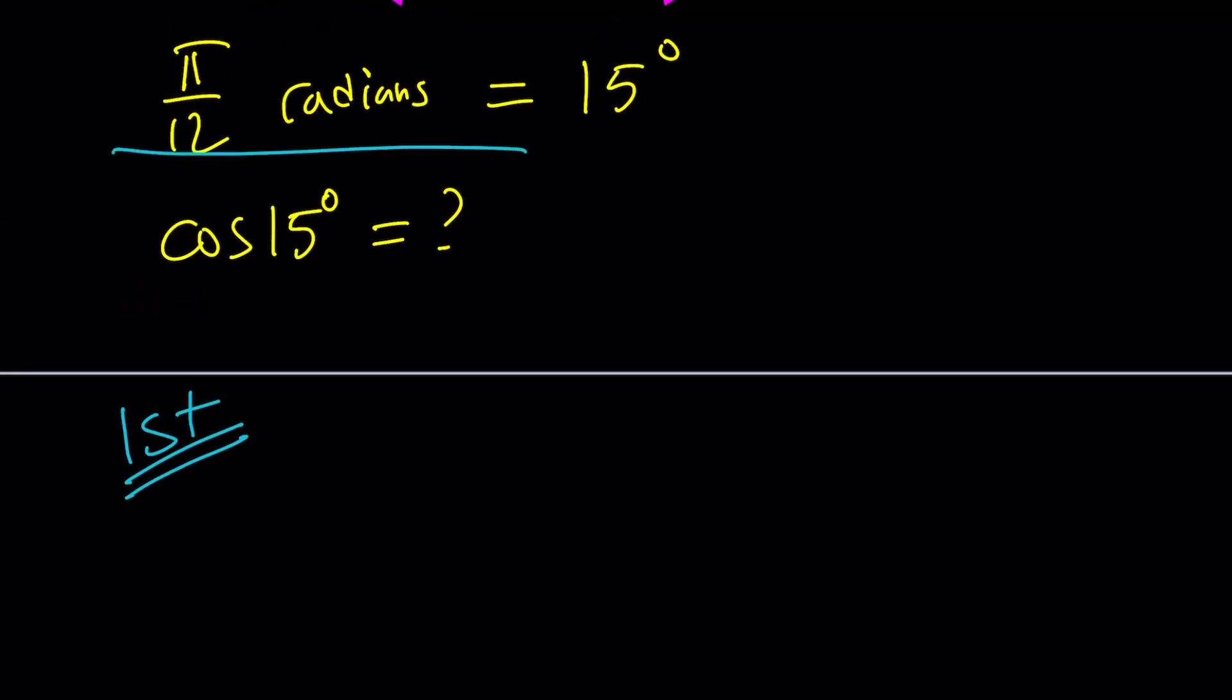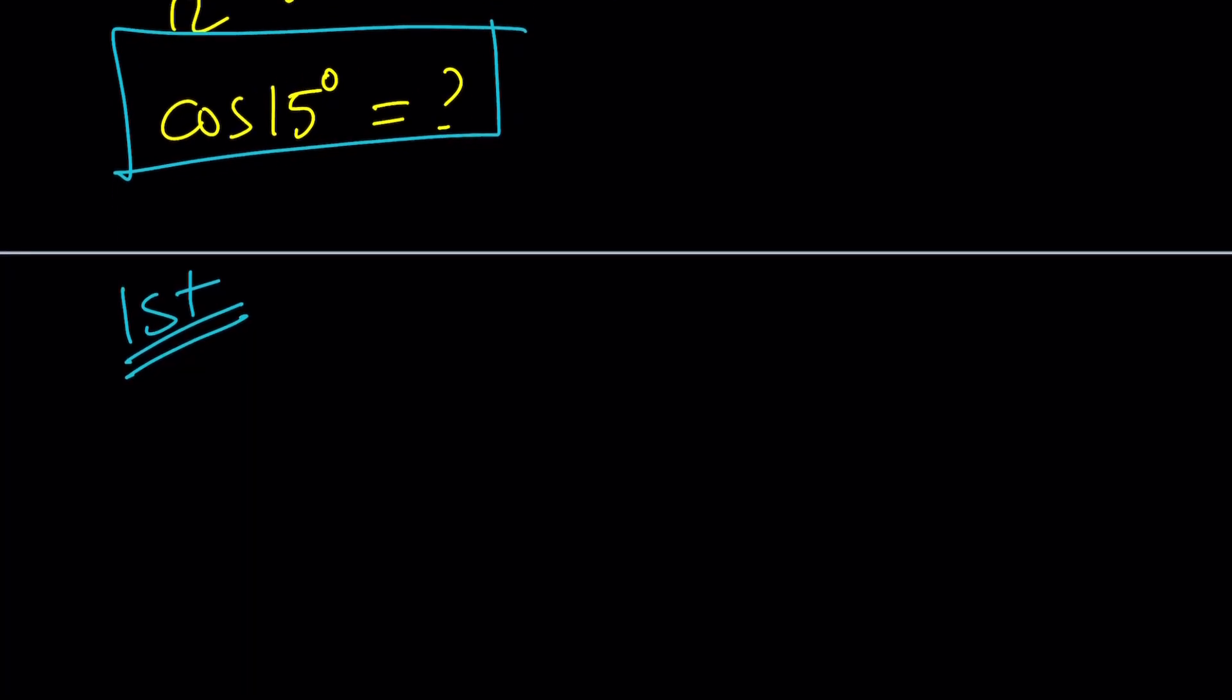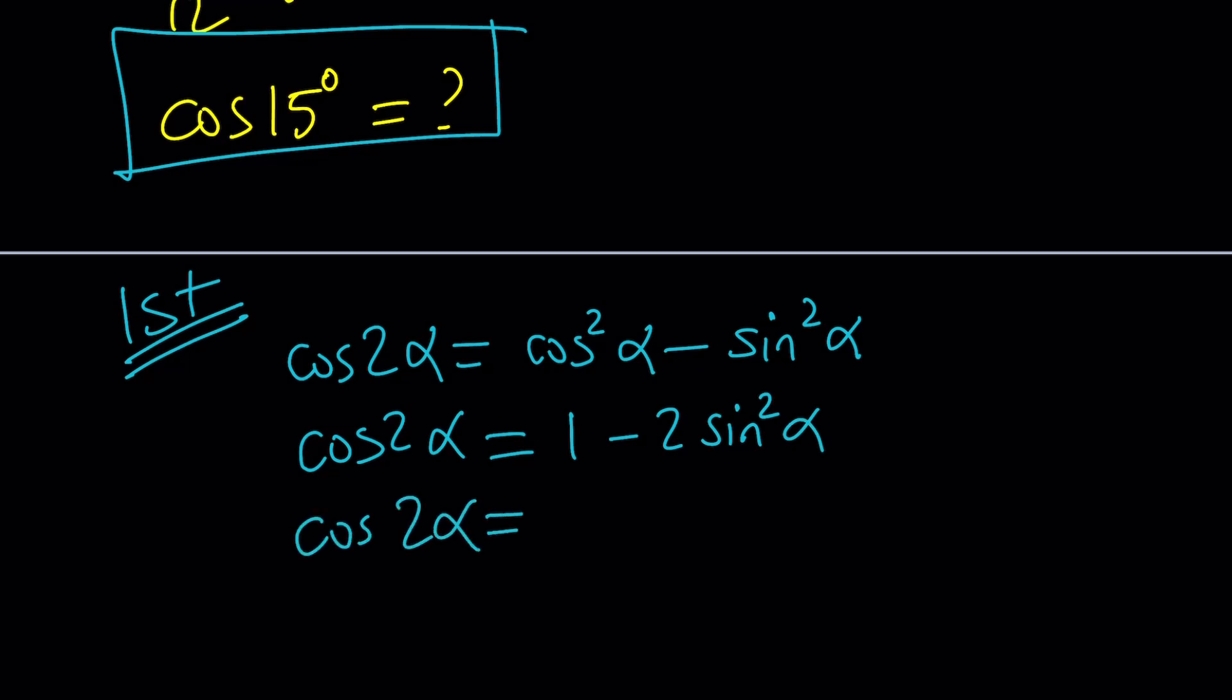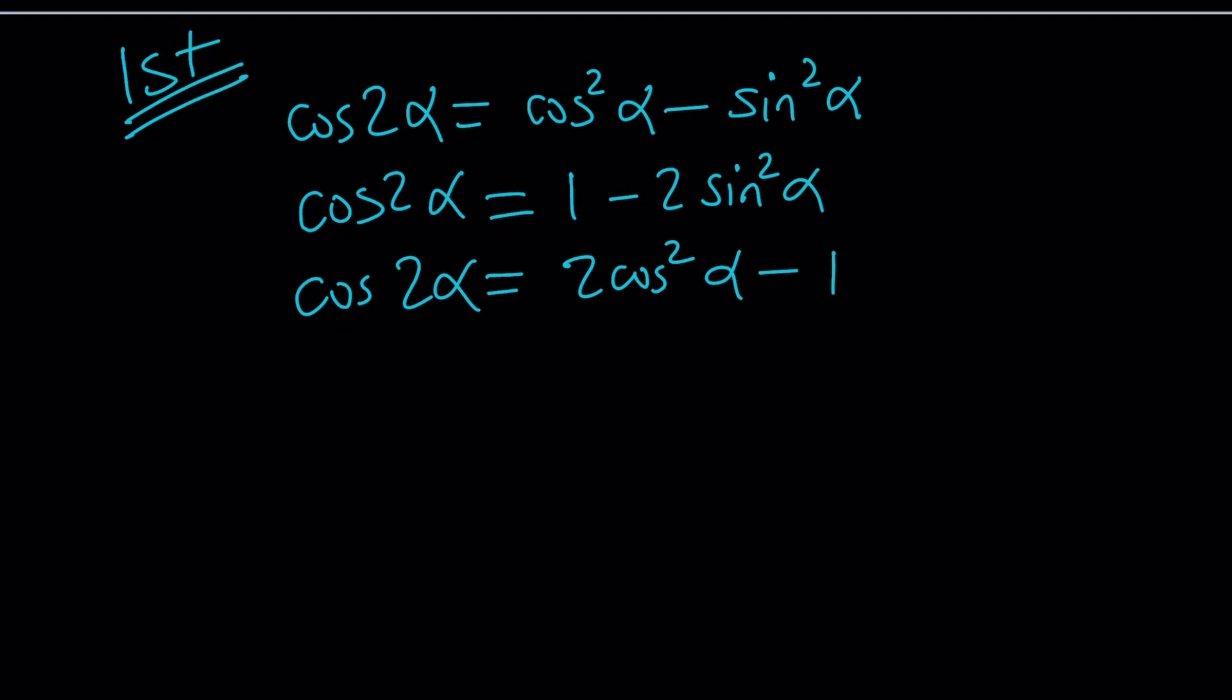I'm going to evaluate cosine of 15 degrees. 15 is a semi-special angle. It's not special. Semi indicates cutting something in half, right? That's what we're going to do. So we're going to start with the double angle formula for cosine. There are three formulas for cosine. Cosine 2α can be written as cos²α - sin²α. This is the main one, but if you replace cosine squared with 1 minus sine squared from the Pythagorean theorem, you're also going to get 1 - 2sin²α. Or you can write cos 2α as 2cos²α - 1. So this is the one I'm going to use because I do have the value of cosine 2α.